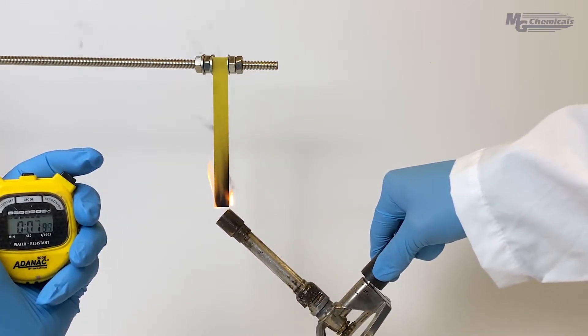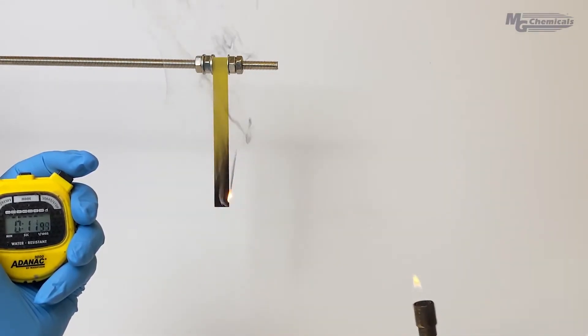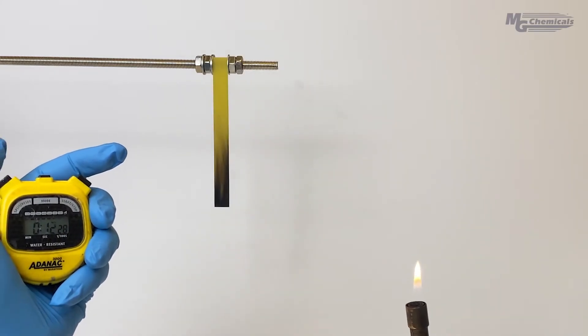We repeat the vertical burn test, as was shown with the potting example, and see that the coating quickly self-extinguishes, giving it a V0 rating.